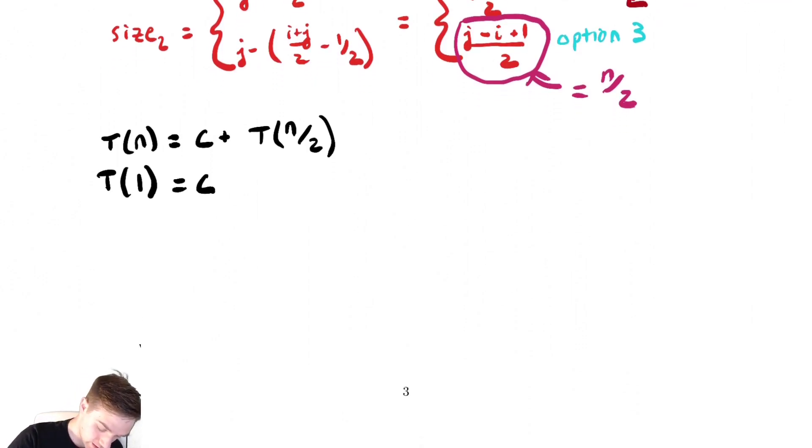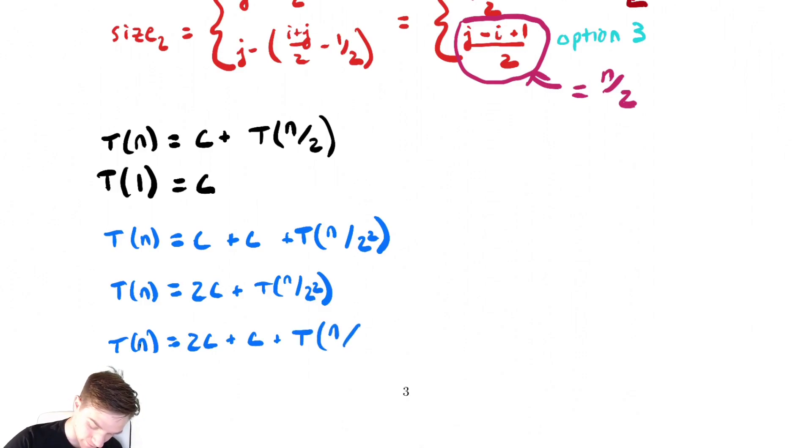Now, let's power through our substitutions. T(n) equals c, plus make a substitution of n over 2, and we get c plus T(n over 2 over 2), which is n over 2 squared. This equals 2c plus T(n over 2 squared). Let's do another substitution. T(n) equals 2c plus make another substitution, and we get another copy of c, plus T(n over 2 squared divided by 2). That's n over 2 cubed. So, T(n) equals 3c plus T(n over 2 cubed). My original expression, I had c plus n over 2, then 2c over n over 2 squared, and then 3c over, sorry, 3c plus T(n over 2 cubed). So, generically, I have T(n) is equal to k times c plus T(n over 2 to the k).